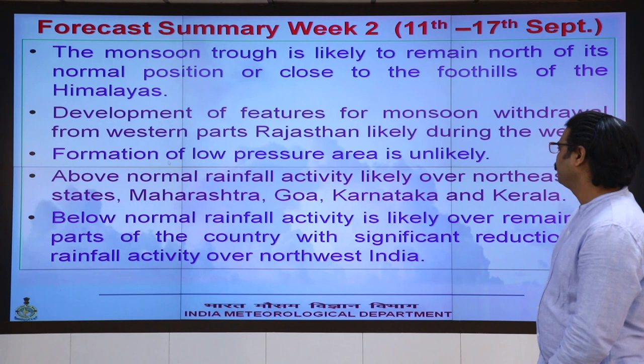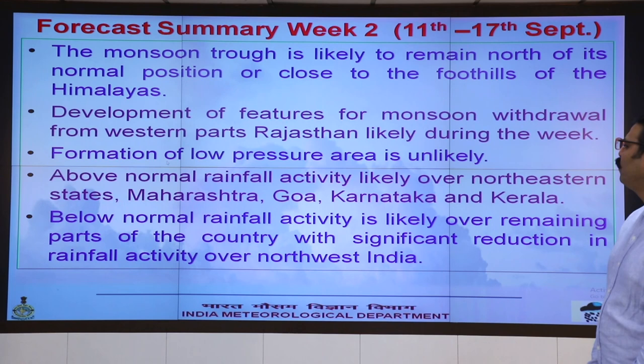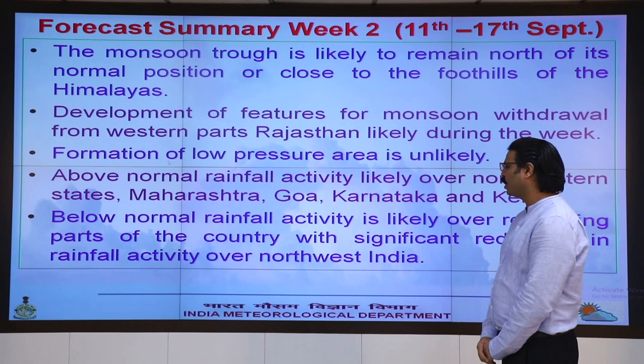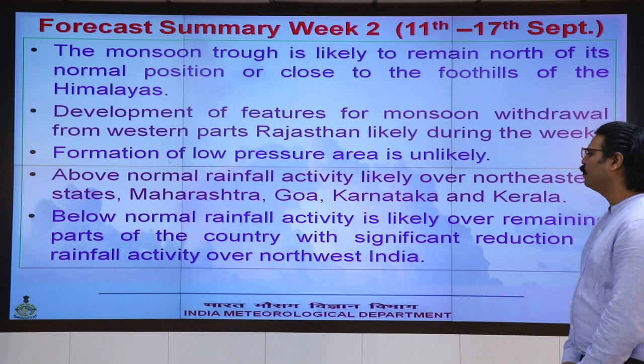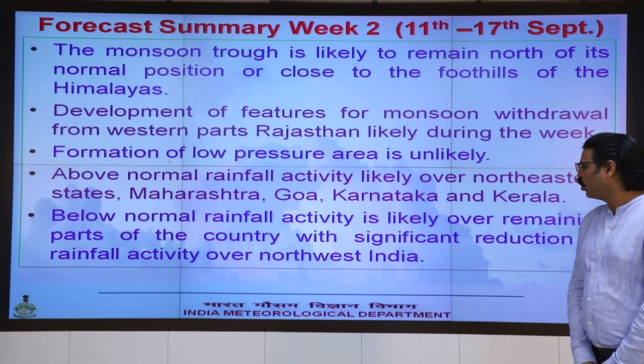Rainfall will decrease over this region. Normal rainfall activity is likely over the northeastern states, Maharashtra, Goa, Karnataka, and the Kerala coast. Below normal rainfall activity is likely over the remaining parts of the country, with significant reduction over northwest India and adjoining central India. Thank you. Namaskar.